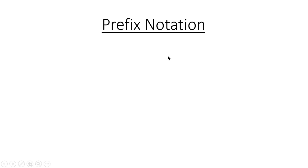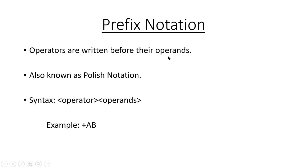Now let me explain about prefix notation. As the name says, the operator comes before the operands. It is also known as Polish notation. The syntax is given as operator followed by operands. For example, plus a b. Here, operator plus comes before two operands a and b.